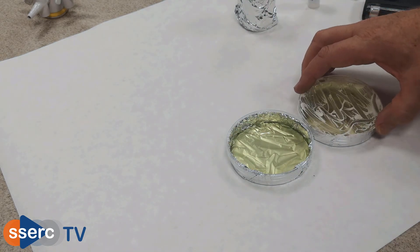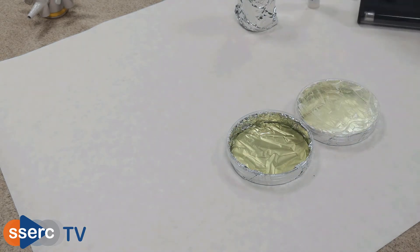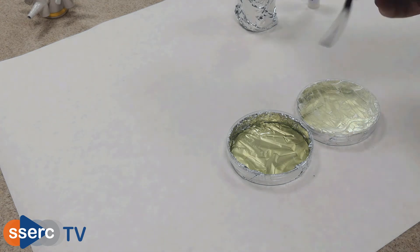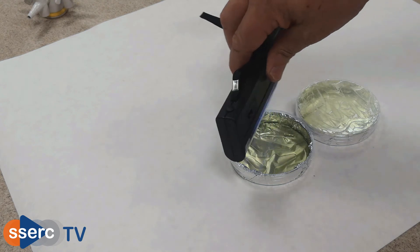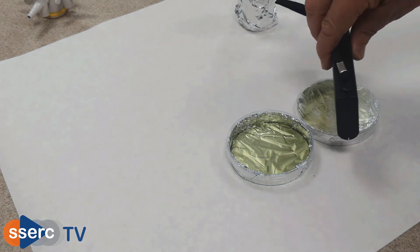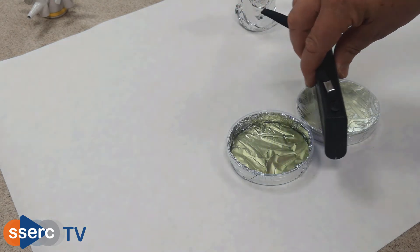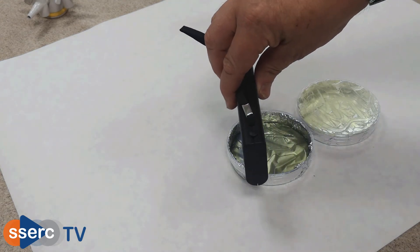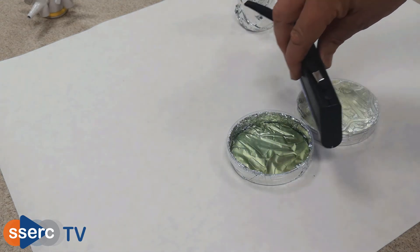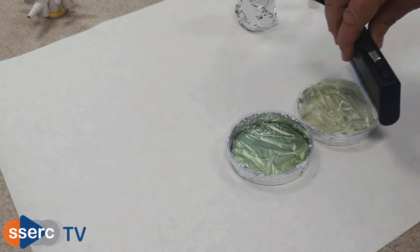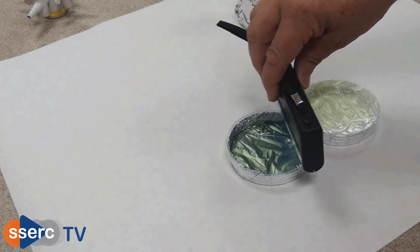Now put the lids on and set about exposing them to the UV light. If you don't have access to a UV lamp just place them on a bright windowsill. It may take longer but will certainly work. If you do have a lamp, like this one here perhaps, then try to ensure that all the dishes get roughly the same exposure. You can see I'm moving the lamp about over the dishes, keeping it at the same height as far as I can.